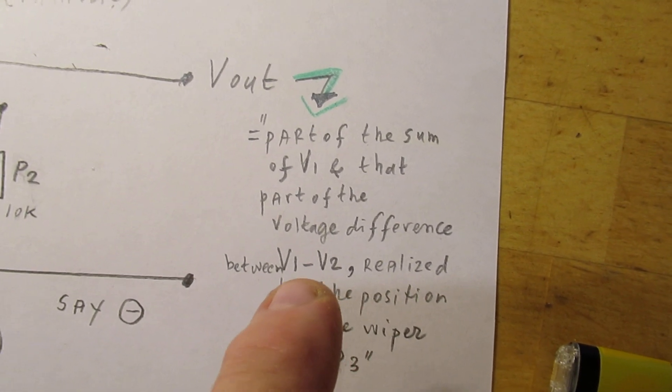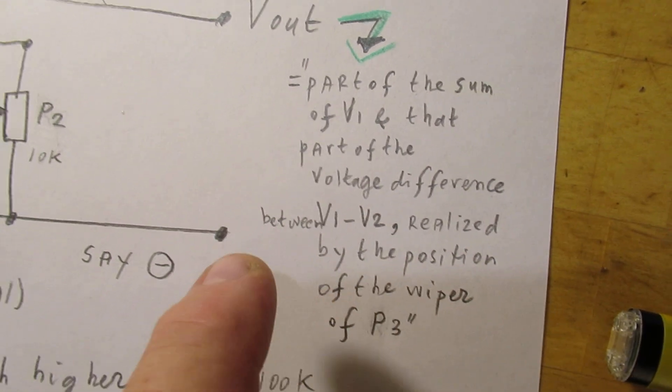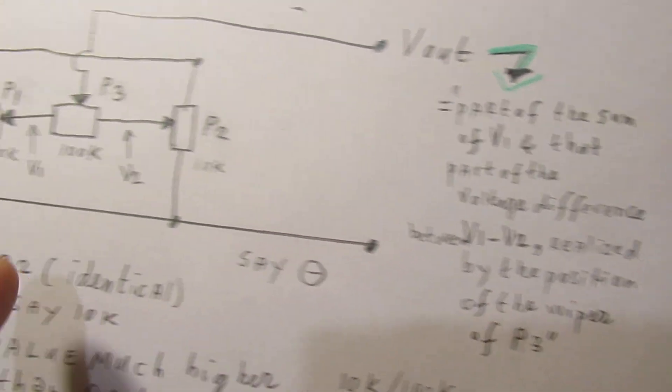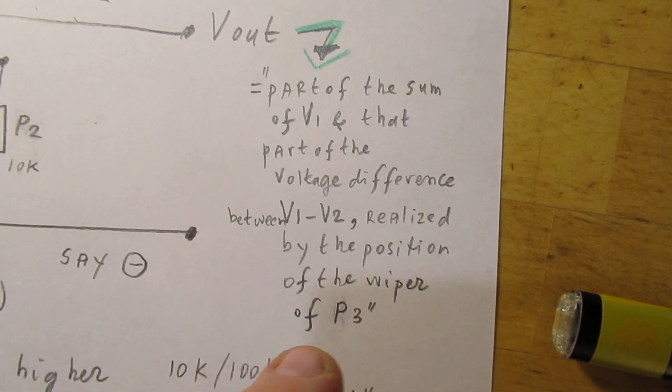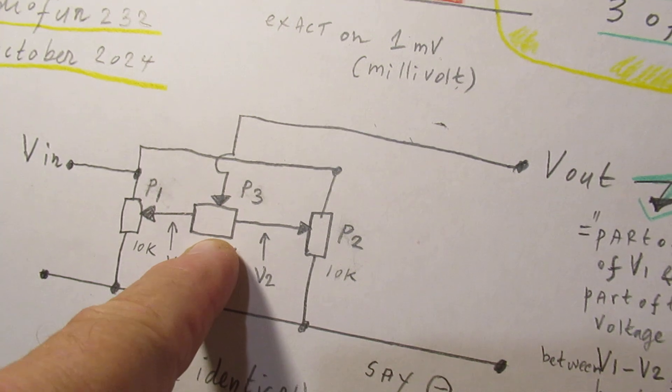And that part of the voltage difference between V1 and V2, that is here and here, realized by the position of the wiper of potentiometer 3.